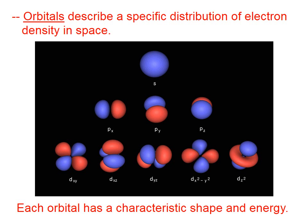In any case, each orbital has a characteristic shape, shown here, and a characteristic energy. Again, these shapes are solutions of Schrödinger's equation.